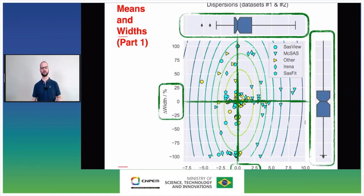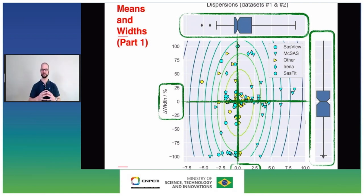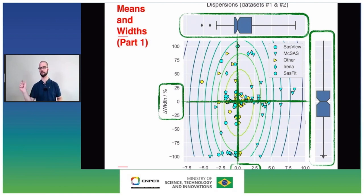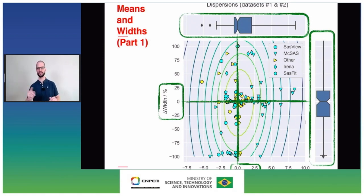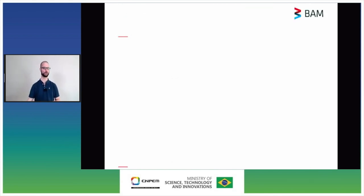In terms of distribution width — on a different scale — 50% of entries were within 50% of the median width, but the spread extends well beyond 200% of the median width. Part of this problem is reporting differences: even though I specified that widths should be indicated as standard deviation in nanometers, many participants appear to have copied the width result directly from their software. Converting widths from one type to another is non-trivial and can be very complicated, meaning we may not be able to directly compare these widths.